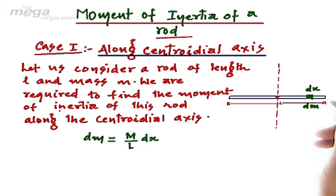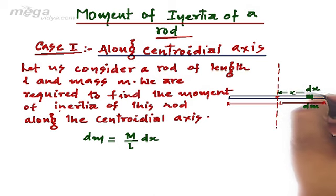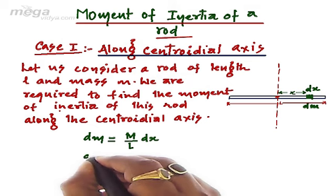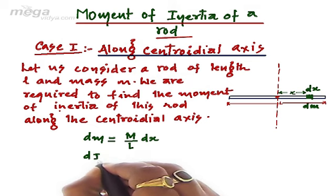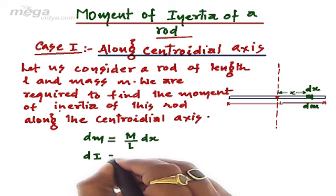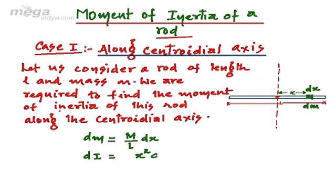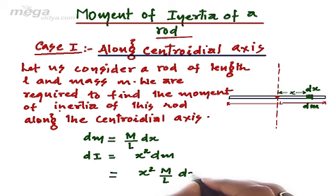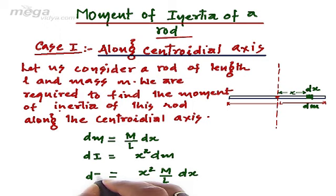Since the elementary length dx is placed at a distance x from the centroidal axis, the elementary moment of inertia dI will be equal to x squared into dm, which will come out to be equal to x squared into m upon l dx. This is the value of dI.